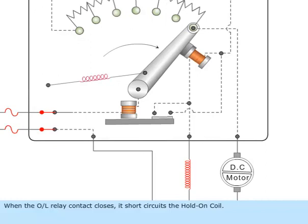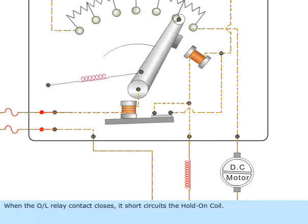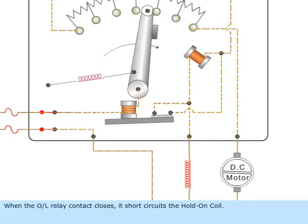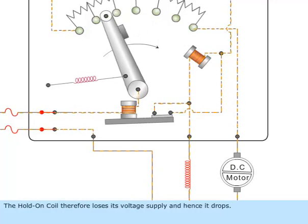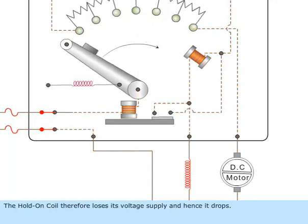When the overload relay contact closes, it short circuits the hold on coil. The hold on coil therefore loses its voltage supply and hence it drops.